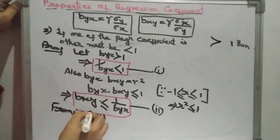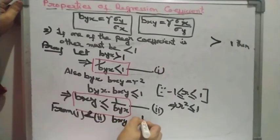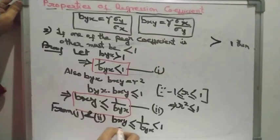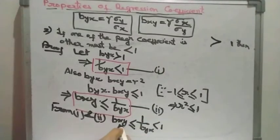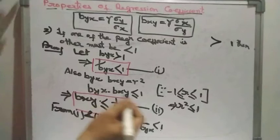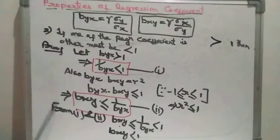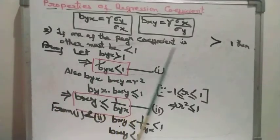Comparing equations (1) and (2): since b_xy ≤ 1/b_yx and 1/b_yx < 1, we get b_xy < 1. So we started with b_yx > 1 and proved that b_xy < 1. Hence, if one regression coefficient is greater than one, the other must be less than one.